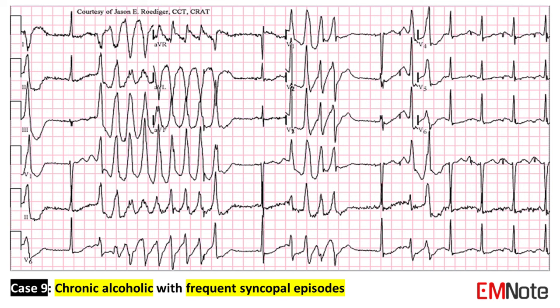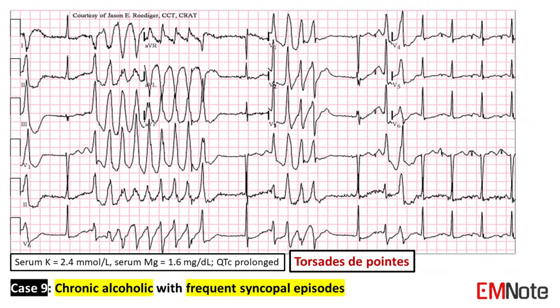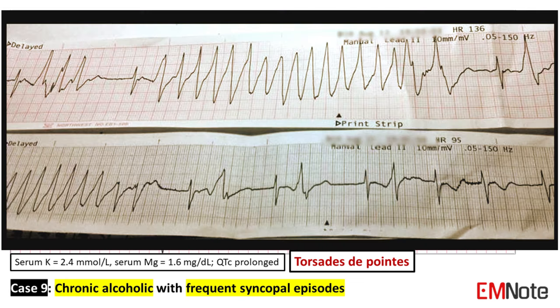Case 9: The patient is a chronic alcoholic presenting with frequent syncope episodes. The ECG shows torsades de pointes, which is a type of polymorphic ventricular tachycardia that can lead to sudden cardiac death. The ECG demonstrates a characteristic illusion of a twisting of the QRS complex around the isoelectric baseline. It is hemodynamically unstable and causes a sudden drop in arterial blood pressure, leading to dizziness and fainting.